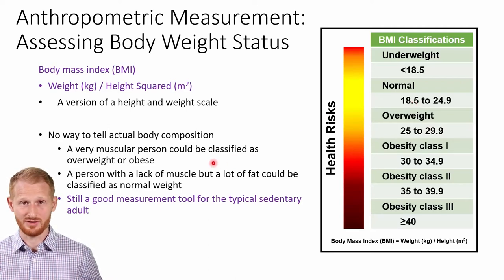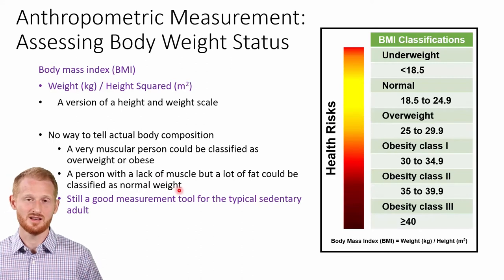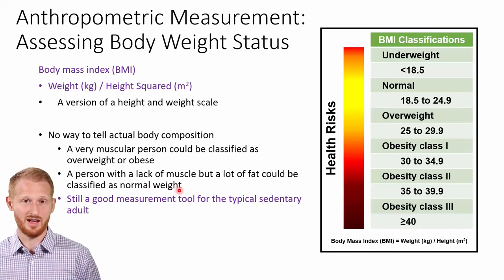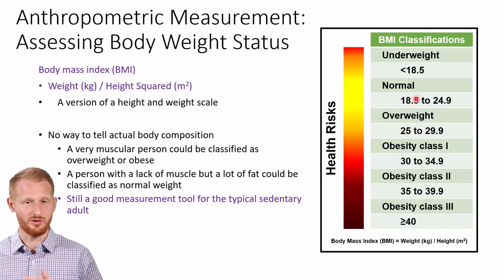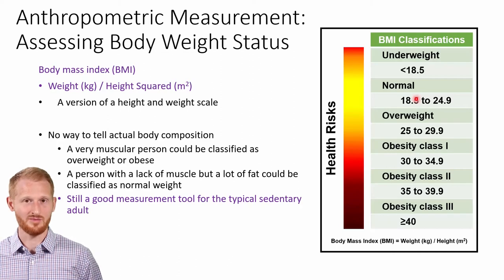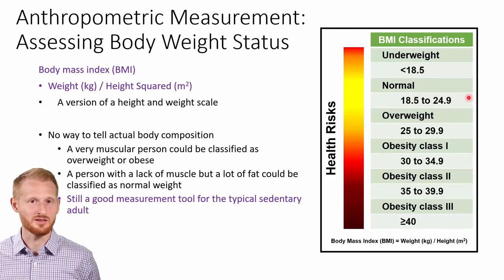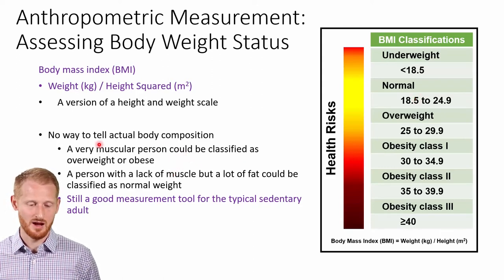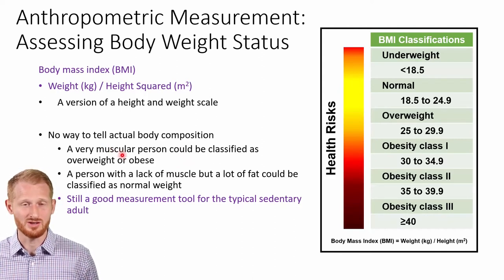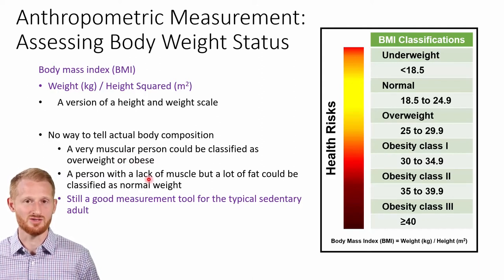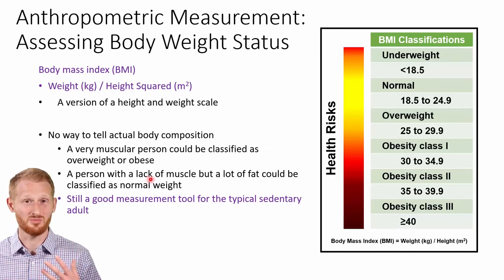The other end of the spectrum where there's also some issues is people who lack much muscle mass but do have a fair amount of fat mass. If somebody is under-muscled but over-fat, they are going to look as though they're normal weight because they have weight on them — that weight just happens to be body fat, not muscle. This is more likely to be seen in the elderly population where muscle mass is wasted a little bit but fat mass has been maintained or even increased.